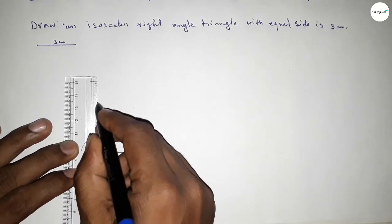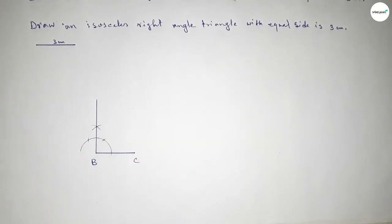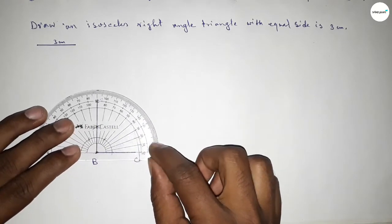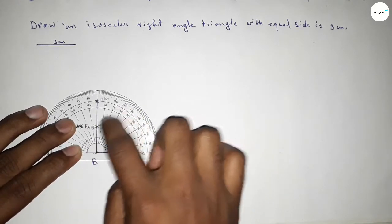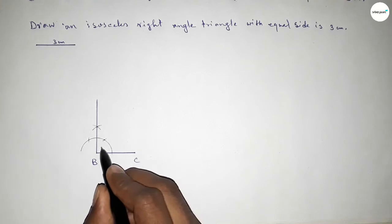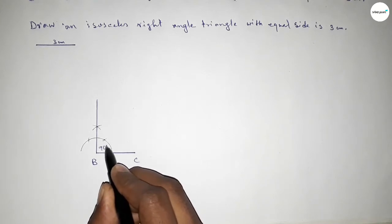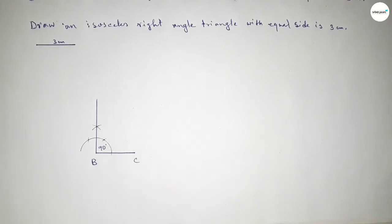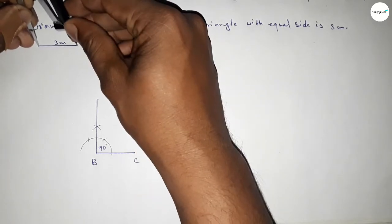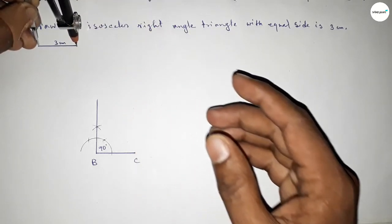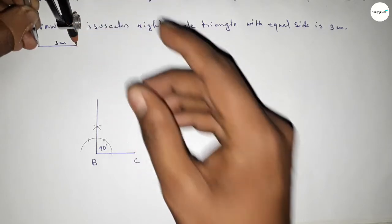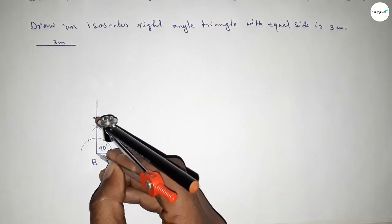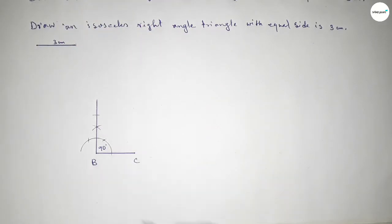Now joining this side to get a 90 degree angle. Checking whether it is 90 degrees or not — this is perfectly 90 degrees. Now taking the length three centimeters using the compass, putting the compass on point B and cutting here. So taking here point A.